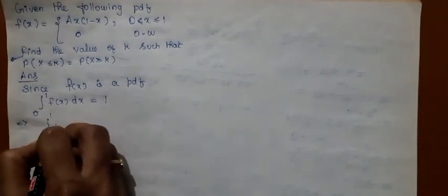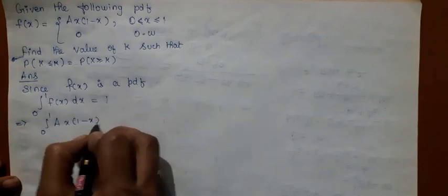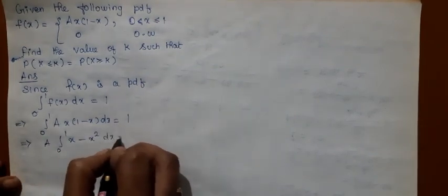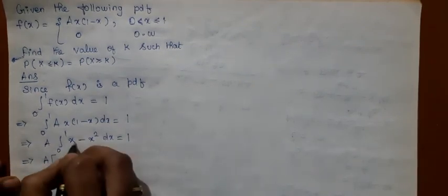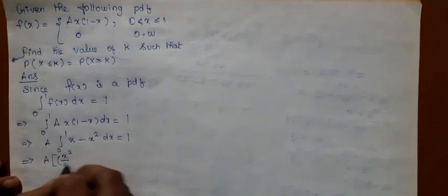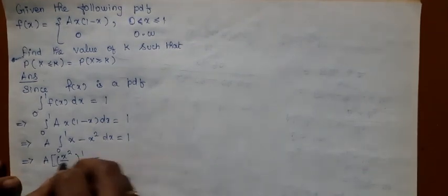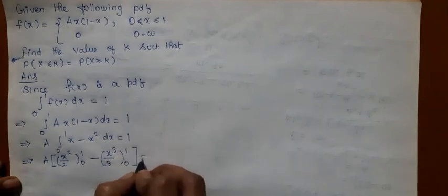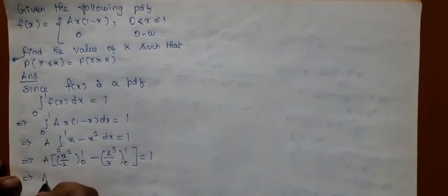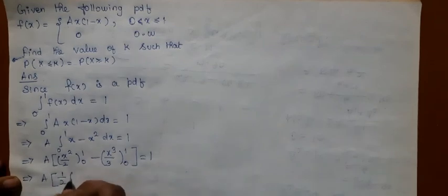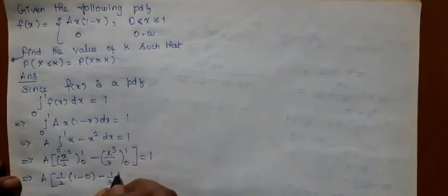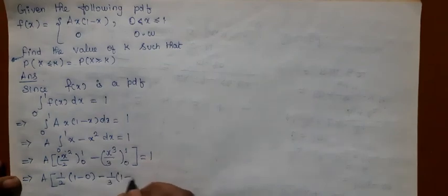That is, integral from 0 to 1 of A·x·(1 minus x) dx equals 1. So A times the integral from 0 to 1 of (x minus x squared) dx equals 1. When you integrate x, you get x squared by 2, and for x squared, the integral is x cubed by 3, with the range from 0 to 1.